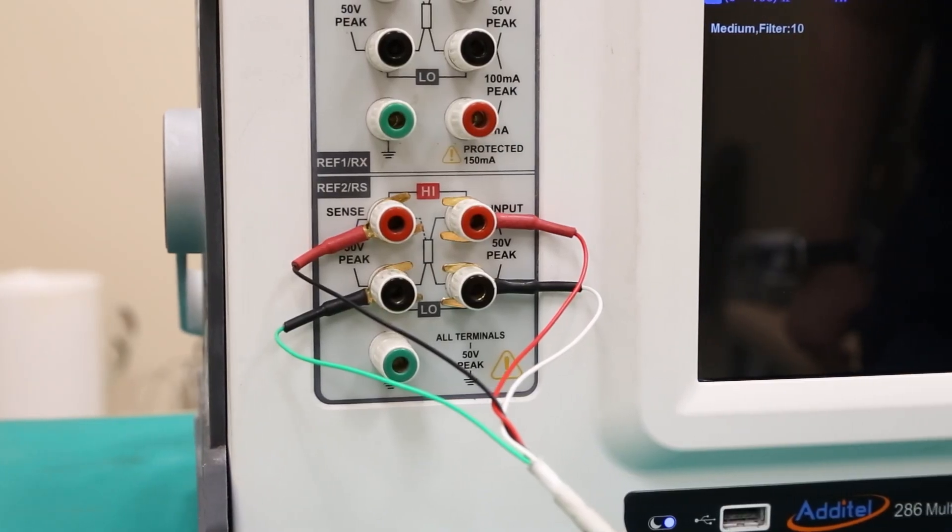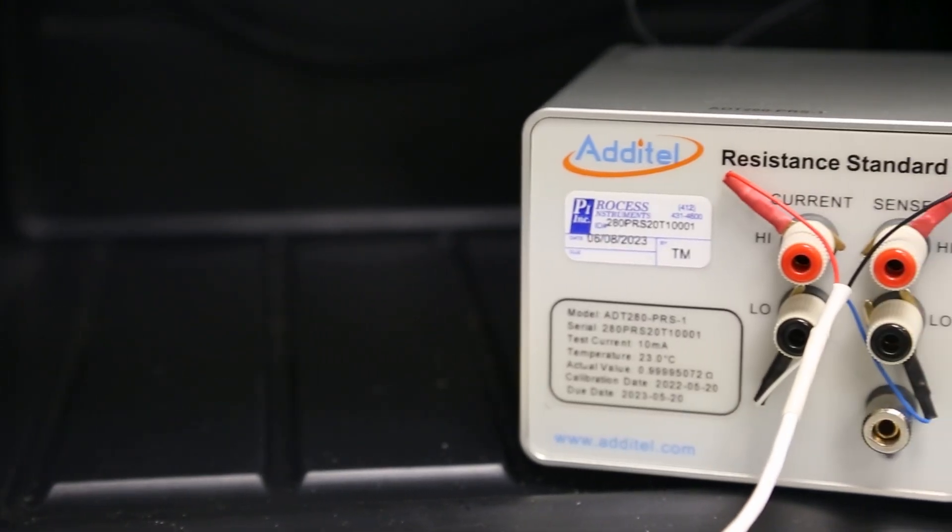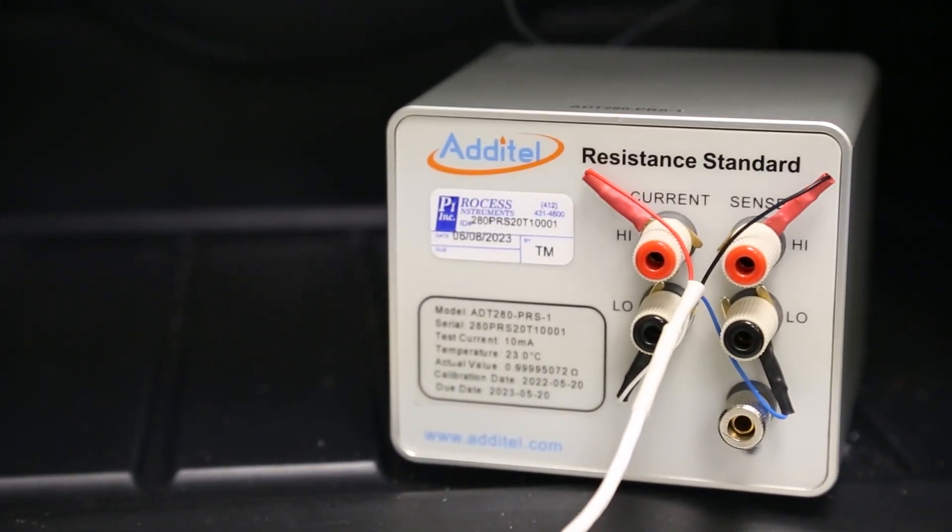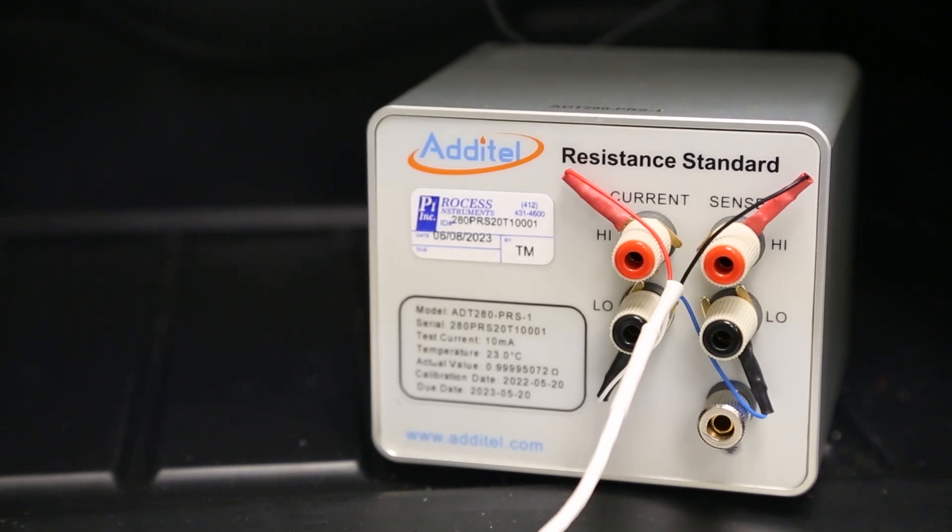To begin, we'll connect a reference standard resistor to the REF2 port on the 286. This 100 ohm resistor is stored in a precision temperature bath at 23 degrees Celsius and will be used as an external reference to calibrate the five probes against.